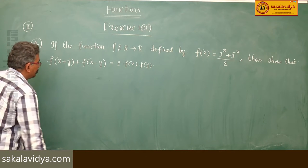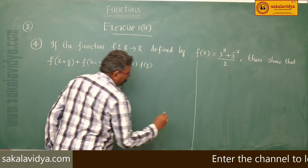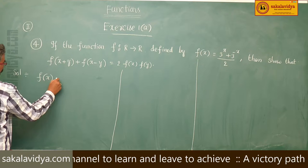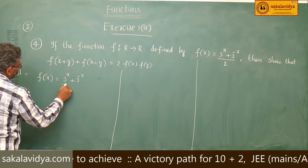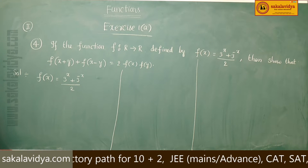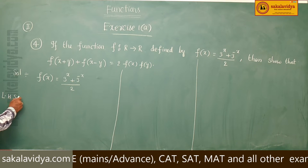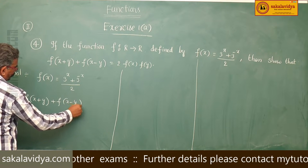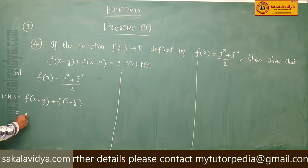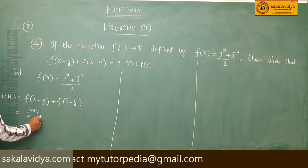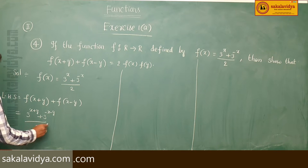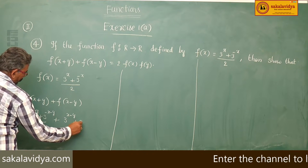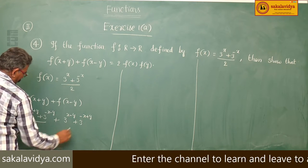Solution. Given f(x) = (3^x + 3^(−x)) / 2. Taking the left-hand side: f(x+y) + f(x−y) = (3^(x+y) + 3^(−x−y)) / 2 + (3^(x−y) + 3^(−x+y)) / 2.